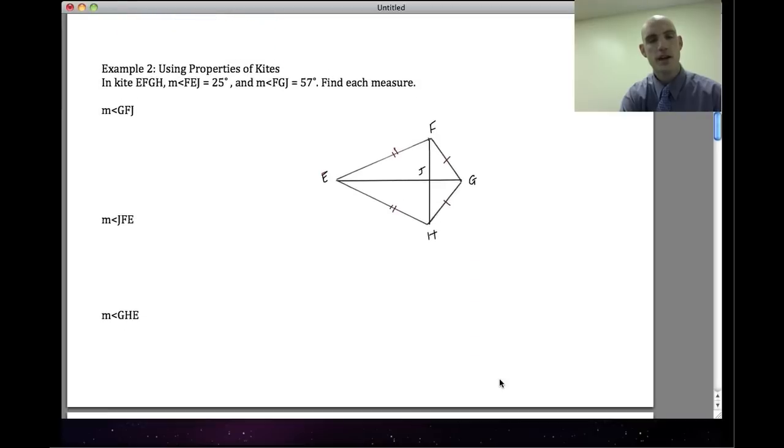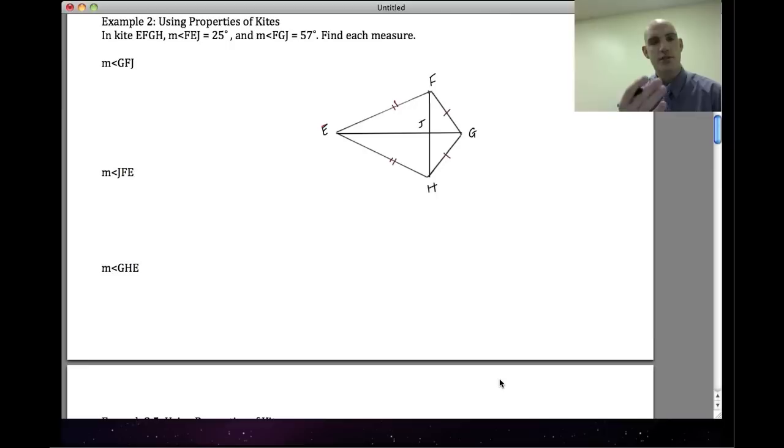I'm going to move on to Example 2. In Example 2, we have three things that we're going to find—all three of them are angle measures. The first one that we're going to find is the measure of angle GFJ in this kite EFGH. Here we have that the measure of angle FEJ is 25 degrees.